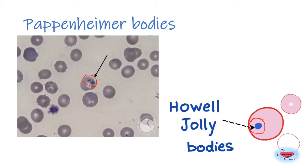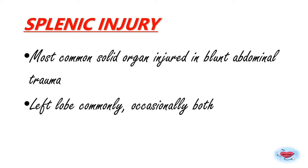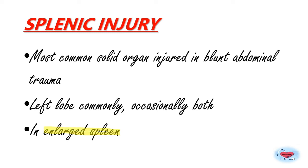These two bodies will not be seen in the presence of an accessory spleen. Next is splenic injury or ruptured spleen — the most common solid organ injured in blunt abdominal trauma. Splenic injury commonly follows road traffic accidents, blunt injury, or stab wounds. Enlarged spleens are more susceptible, and spontaneous rupture can occur in malaria and infectious mononucleosis.